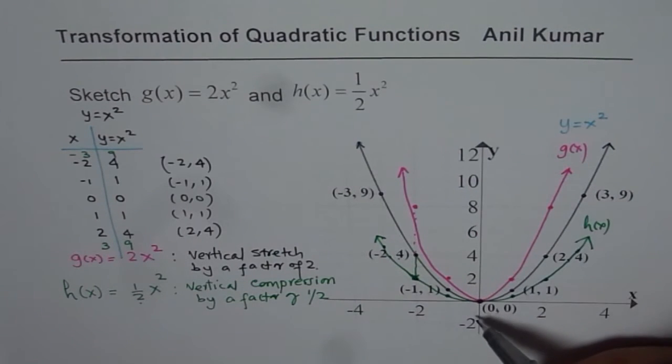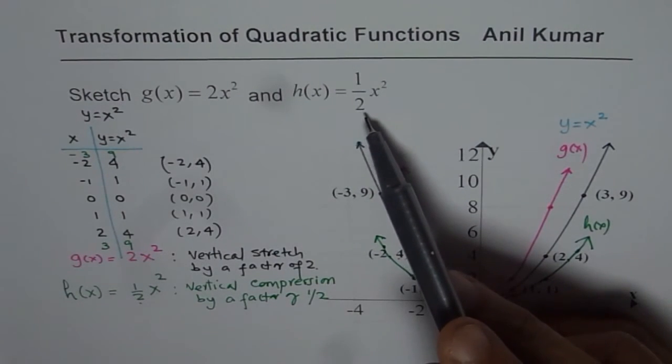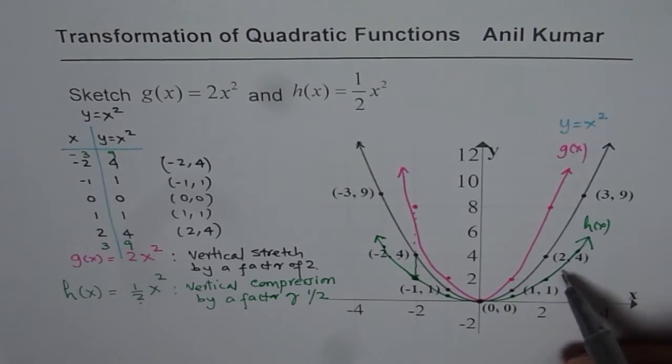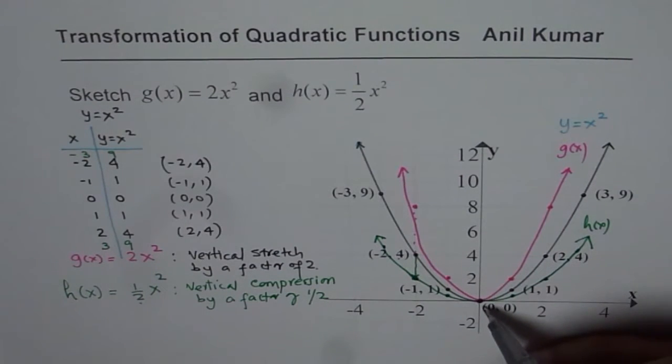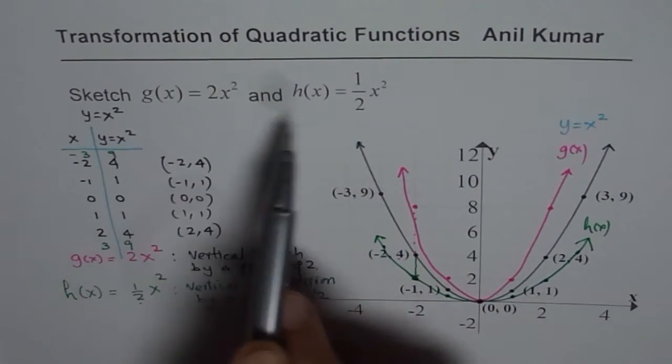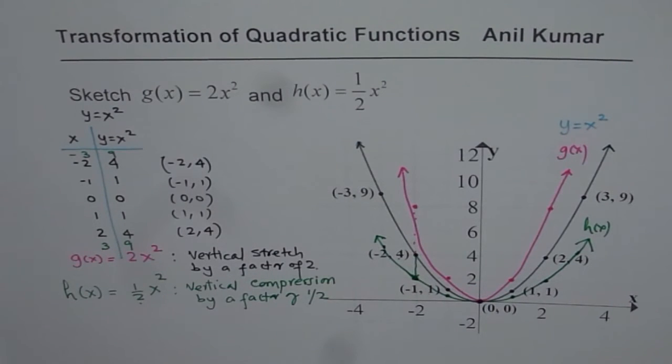Its axis remains same. Vertex is also same. 0, 0. When we compress, it becomes wider. Axes and vertex do remain same. So unless and until you translate it left, right, up or down, the axis and the vertex or the turning point for the parabola remains same.